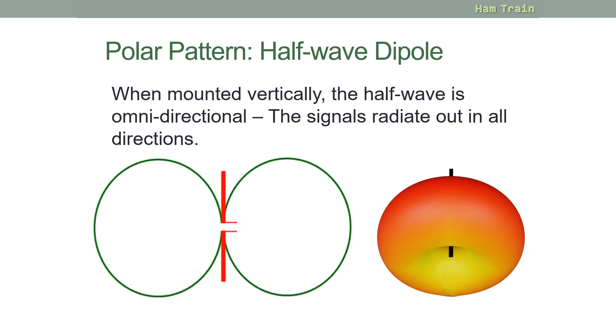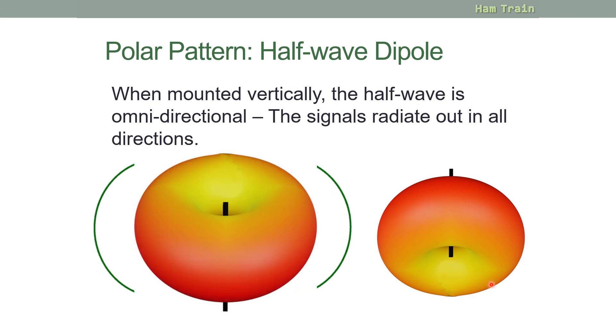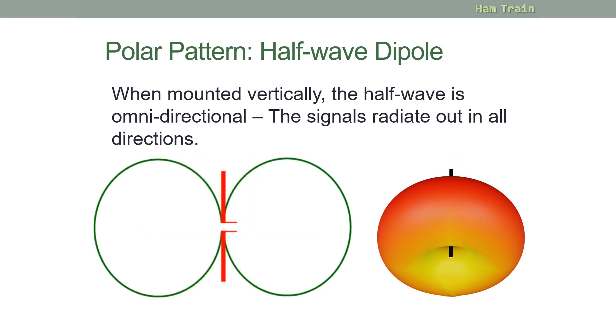That was for a horizontally mounted dipole. Let's look at a vertically mounted dipole. Again, here are the elements of our dipole. And you can see the signal is radiating out in this kind of pattern. If you were to look at it in 3D, it would look a little bit like a donut or a car inner tube, showing how the signal is radiated out from our balanced dipole. The radiated signal from the dipole is omnidirectional, meaning that the signal goes out in all directions. You may be asked in the exam to identify the polar pattern for a dipole, which is what you're seeing on the screen now.